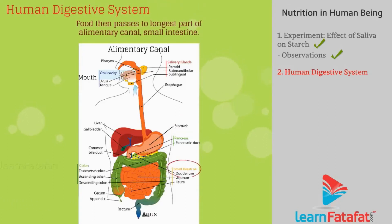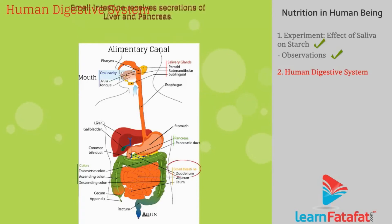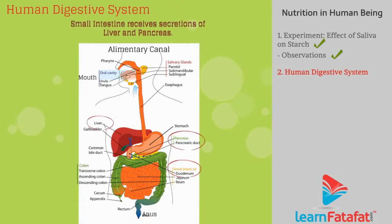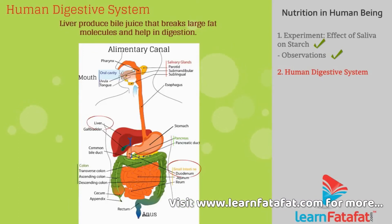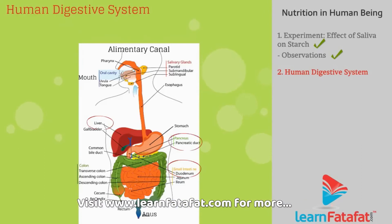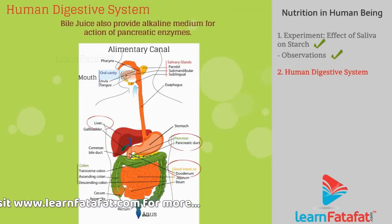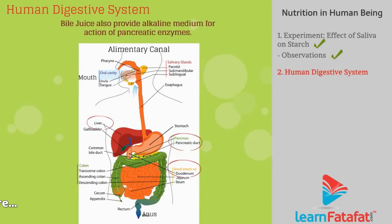Food then passes to the longest part of the alimentary canal: the small intestine. The small intestine receives secretions from the liver and pancreas. The liver produces bile juice that breaks large fat molecules and helps in digestion. Bile juice also provides an alkaline medium for the action of pancreatic enzymes.